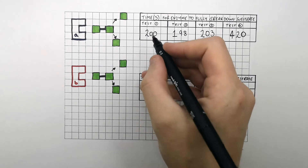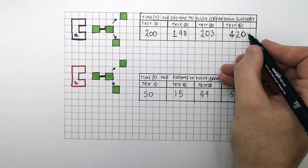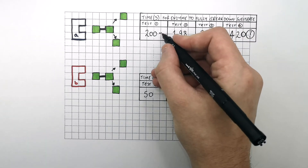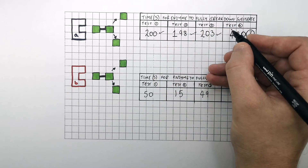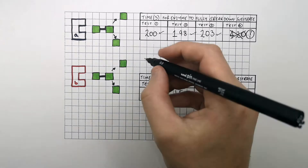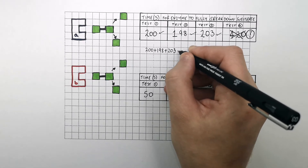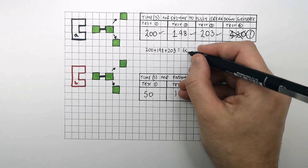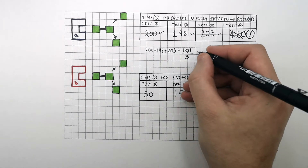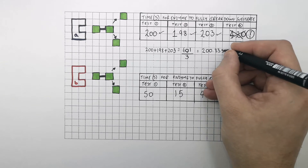So for enzyme A, tests 1, 2 and 3 took 200, 198 and 203 seconds. In test 4, it was 420 seconds — that looks like an anomalous result. So when calculating a mean, we exclude the anomalous result. To calculate the mean: 200 plus 198 plus 203 equals 601 seconds, divided by 3, giving an average time of 200.33 seconds.